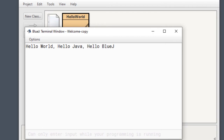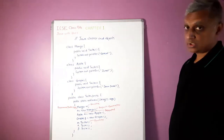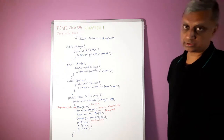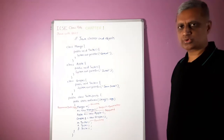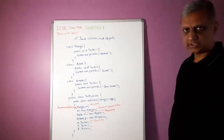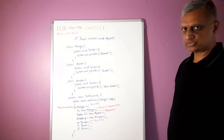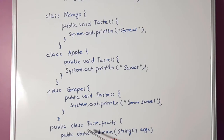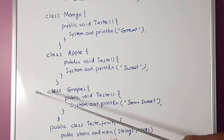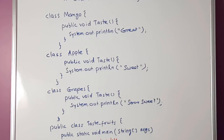Now let us look at a slightly longer program in Java. To run this program, you need to create a new project inside BlueJ's integrated development environment. After creating a new project, create a new class. We have used the name 'Taste_Fruits' (T is capital) — that is the name of our class where the main function is located. We have also created three additional classes and objects using these classes.